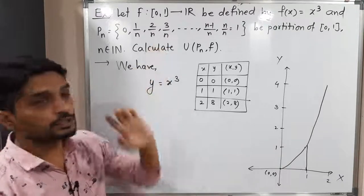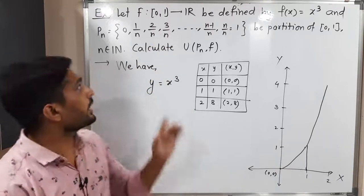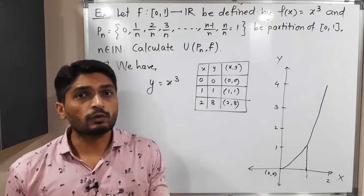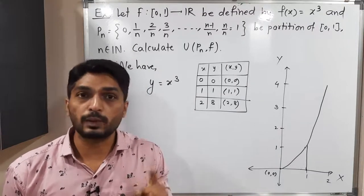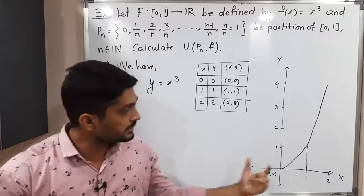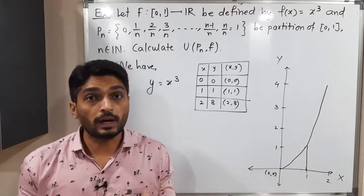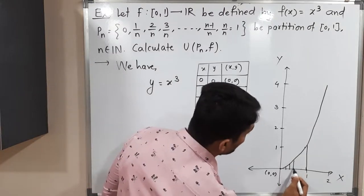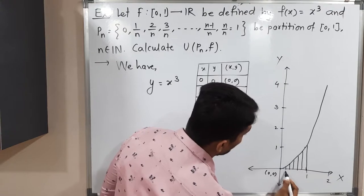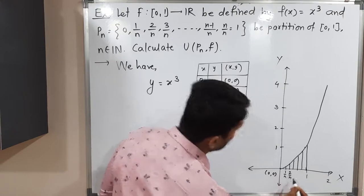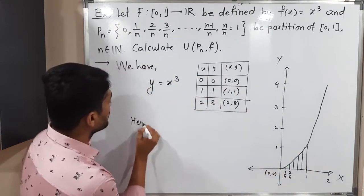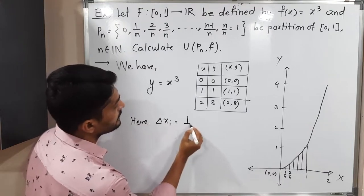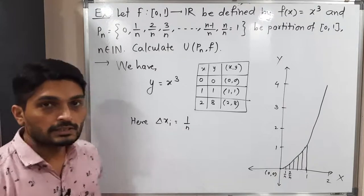The partition given to us is: 0, 1/n, 2/n, 3/n, 4/n, and so on. That means the length of each subinterval is 1/n — they have divided the interval [0,1] into n equal parts. So here Δx_i = 1/n.